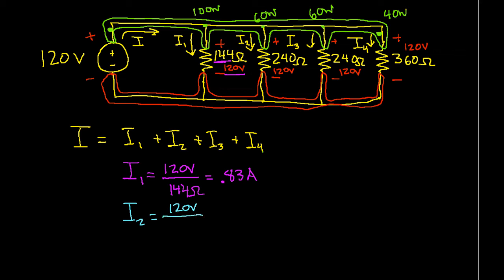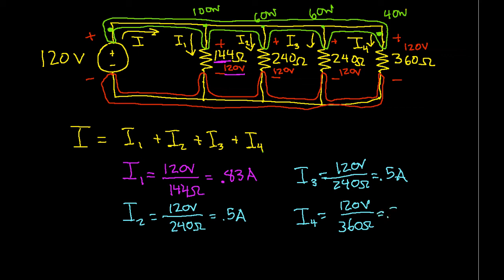I2 will be 120 volts over 240 ohms, which is 0.5 amps. I3 will be the same, 120 volts over 240 ohms, which is 0.5 amps. And I4 will be 120 volts over 360 ohms, which is 0.33 amps.